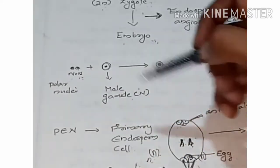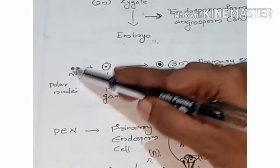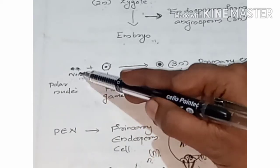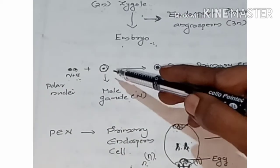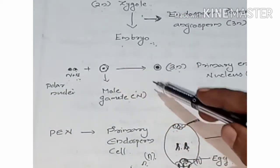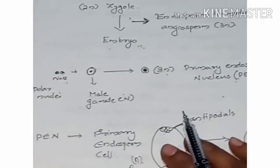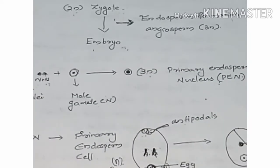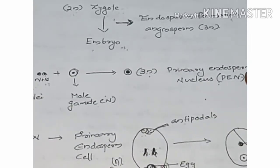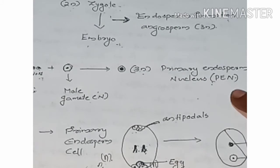The triploid condition arises because the two polar nuclei fuse with a male gamete, which is haploid. The resulting nucleus is the primary endosperm nucleus in triploid condition.